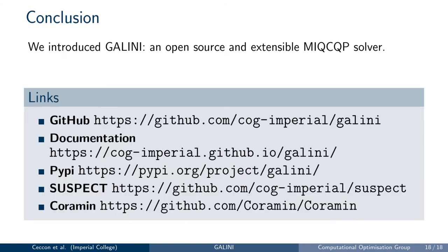In this presentation, we introduced Galini, a solver for mixed integer quadratically constrained optimization problems that can be extended by solver and algorithm developers. I hope you found it interesting and exciting, and if you want to know more, you can visit our project page where you can find the source code and ask any questions. Thank you for your attention.